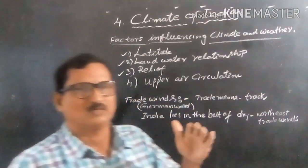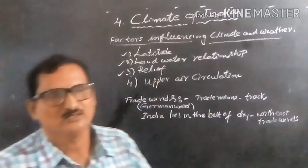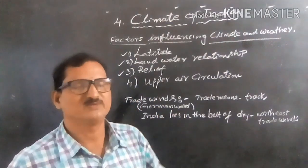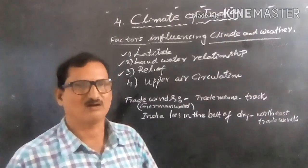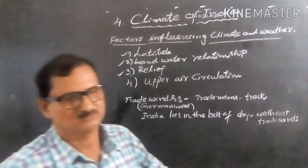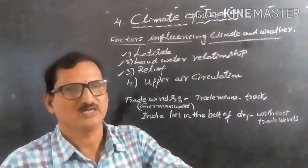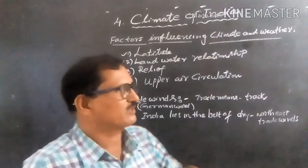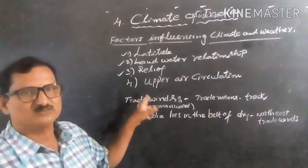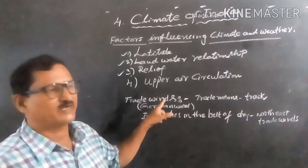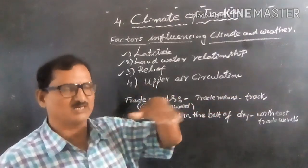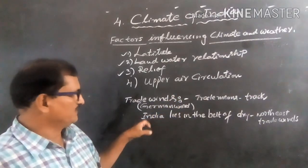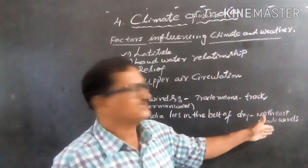Upper air circulation: in the northern hemisphere, the high pressure belt gives rise to permanent blowing winds towards the low pressure of the equatorial belt — they are called trade winds. The word 'trade' is derived from the German word meaning a track, that is, in a systematic, constant line. India lies in the path of the dry north-east trade winds.